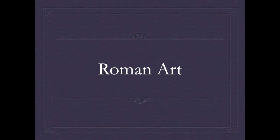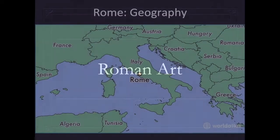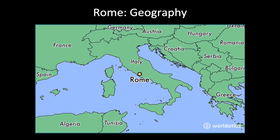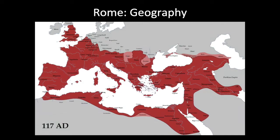Welcome to our lecture on Roman art. First we'll take a look at the geography we're going to be looking at — this is present-day Rome. Of course we're going to be talking about this in Survey 2 when we look at the Italian Renaissance, but Rome is definitely a centerpiece of the production of art. This is what Rome looks like back during 117 AD, and we can see that it stretched throughout Europe as well as North Africa and the Middle East.